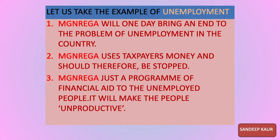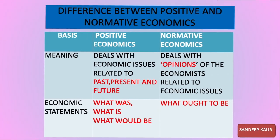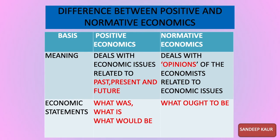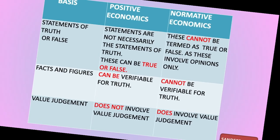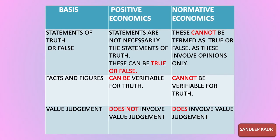These three different opinions are examples of normative economics — they are giving opinions on what should be done by the government to minimize an economic issue. Now, the differences between positive and normative economics: positive economics deals with economic issues related to past, present, and future, while normative economics deals with opinions only. Positive economics tells us what was, what is, and what would be; normative economics tells us what should be done — what ought to be.